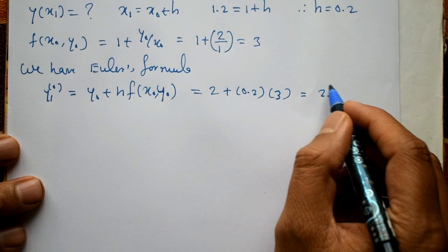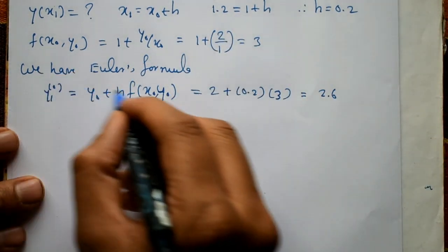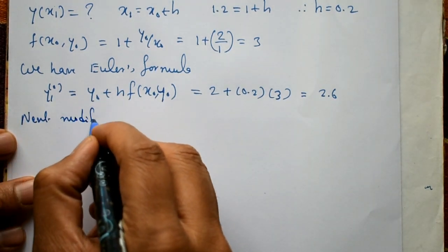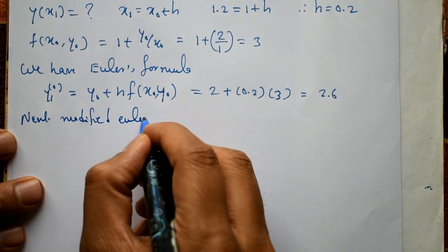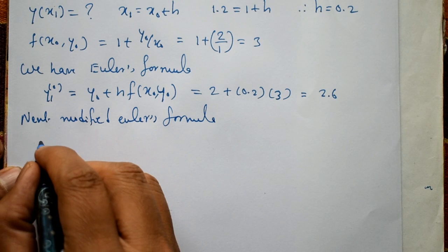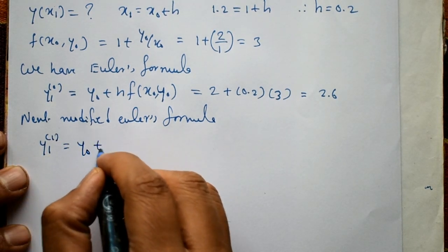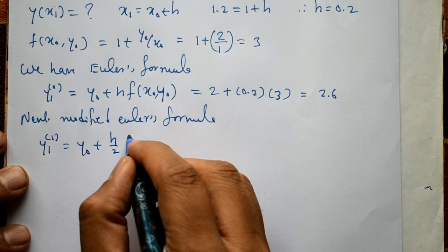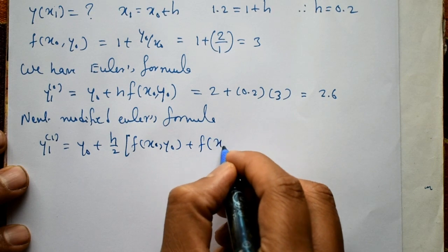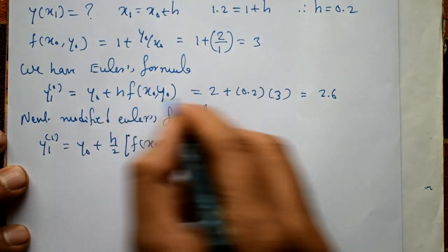This is not an accurate value; we need to follow the Modified Euler's formula. The Modified Euler's formula is y1¹ equal to y0 plus h by 2 into f of x0, y0 plus f of x1, y1⁰, using the previously computed value.